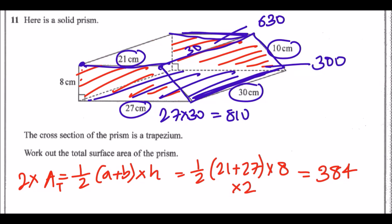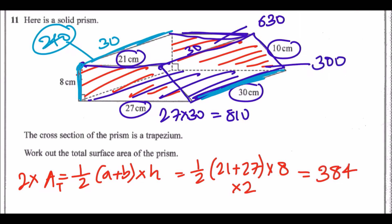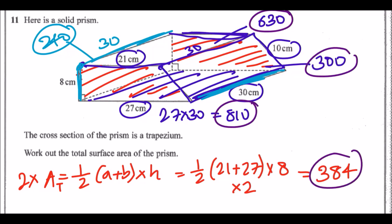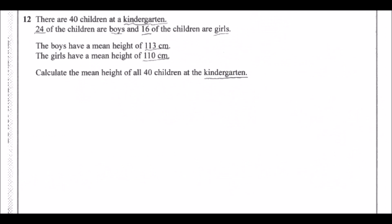The last rectangle is 8 × 30 = 240 cm². Adding all faces together: 240 + 630 + 300 + 810 + 384 = total surface area of 2364 cm².